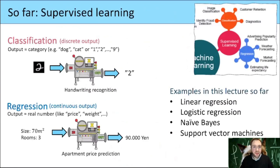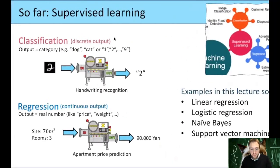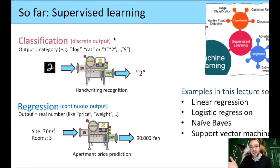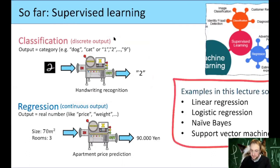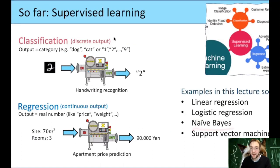We talked about supervised learning for a long time. In supervised learning, there was some supervisor — we had training data with features and labels. For example, the dog-cat example where someone labels pictures. In this lecture we did linear regression, logistic regression, naive Bayes, and support vector machines. Also in the homework you do the spam filter, which is an example of supervised learning.